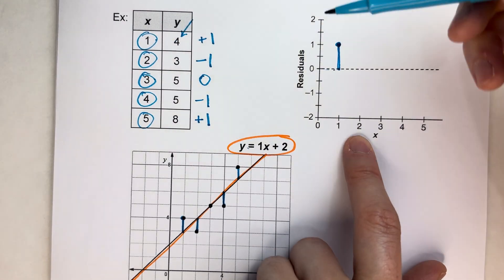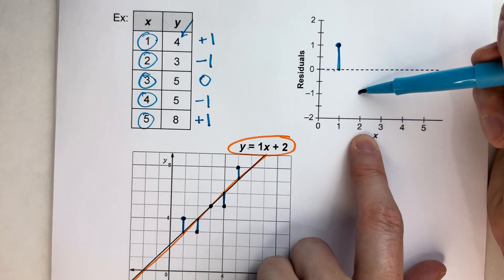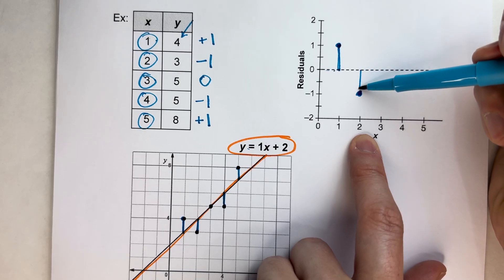For 2, it was 1 below. So for 2, I draw it below. And I draw a little line to show.